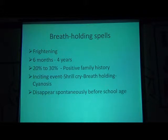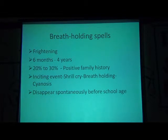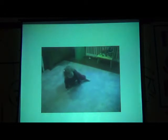A few points about breath holding spells: it is frightening to parents. The usual age group is six months to four years. Positive family history is present in 20 to 30% of patients. The event sequence is: an inciting event, a shrill cry, breath holding, expiration, followed by cyanosis. It disappears before school age. In the video, the child is crying, and at the end of the episode, the child falls and is briefly unconscious. This is a typical breath holding spell.